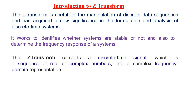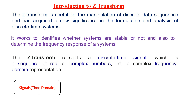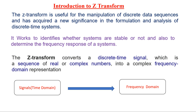Z-transform converts discrete time signals, which are sequences of real or complex numbers, into a complex frequency domain representation. That is, signals in the time domain are converted into the frequency domain by using Z-transform techniques.